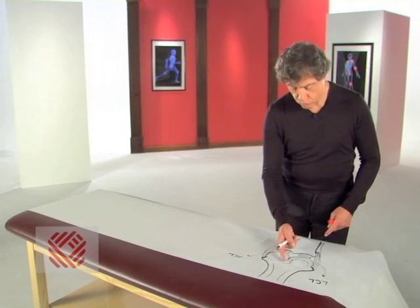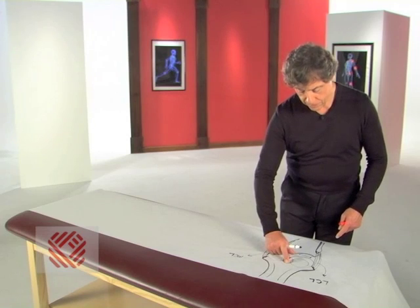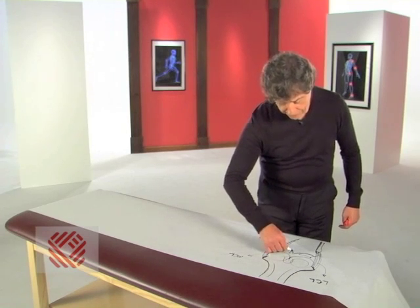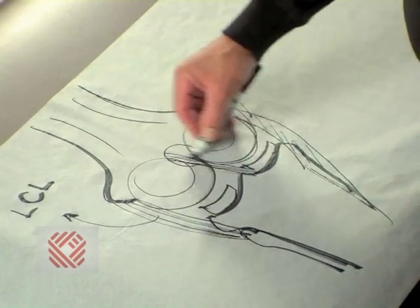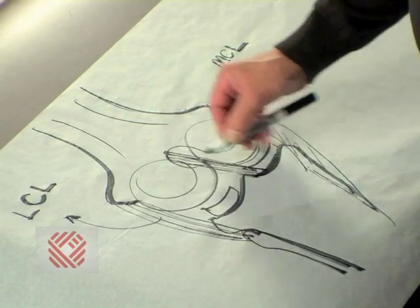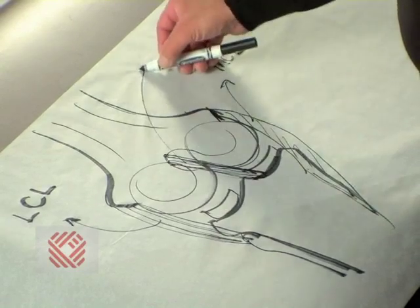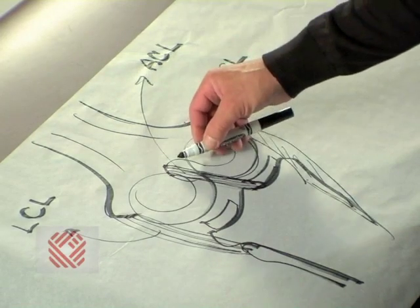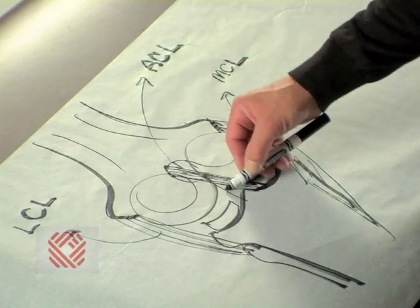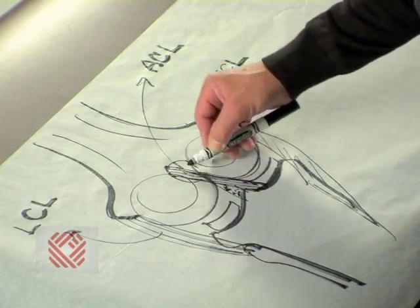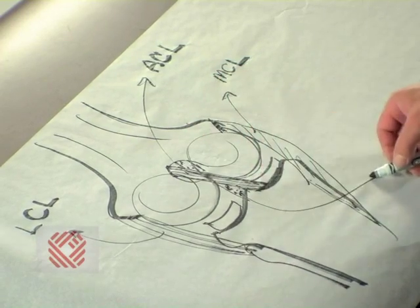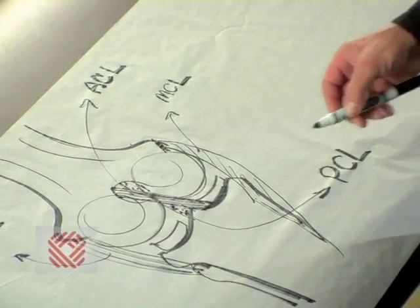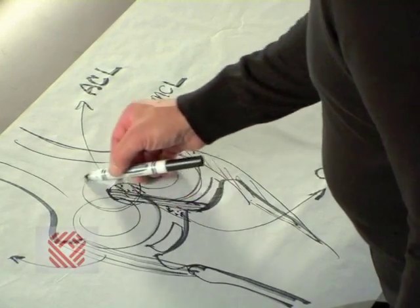We have two ligaments that cross in the middle of the knee. These are called the cruciate ligaments, because they cross. First, the anterior cruciate ligament, the ACL, runs in this direction. Then, running behind it, its partner — the posterior cruciate ligament, or PCL. Superimposed over the front, we can draw the kneecap, or patella.